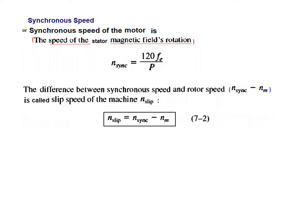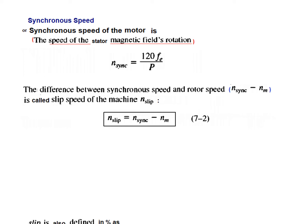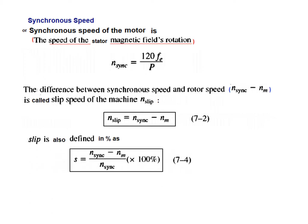The difference between synchronous speed and the rotor speed is important. The synchronous speed is higher and the rotor lags, so its speed is less. The difference between the two is called the slip speed, given by N_slip = N_sync − N_rotor. Slip S in percentage form is: S = (N_sync − N_m) / N_sync × 100%. From this, we can also derive a formula useful for finding the rotor speed: N_m = (1 − S) × N_sync.